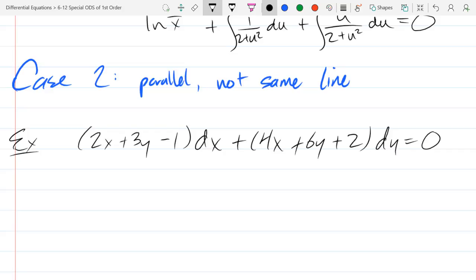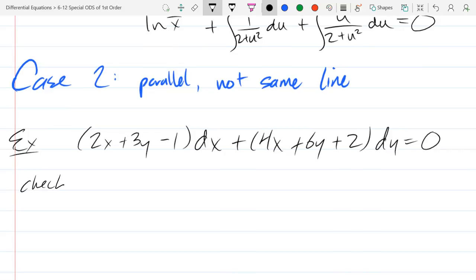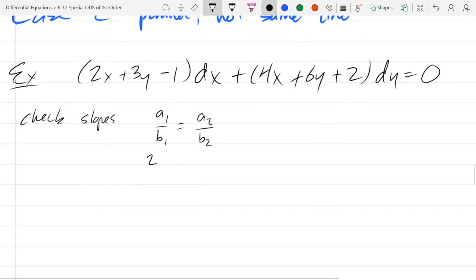So we need to go check slopes first. I think we had, was it a1 over b1, and the parallel case should be a2 over b2. If they were not parallel, they would not be equal. If they are parallel, they better be equal. So, we're just going a1/b1, a2 is 4, b2 is 6, and yes, those are equal, so we got parallel.